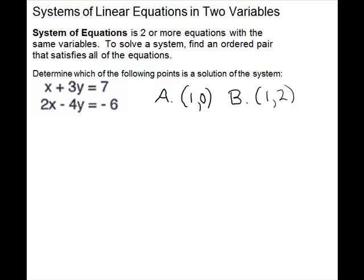So for our system, we have two different points we're going to check. First, the point (1, 0). We'll plug it in — it has to make both equations true to be a solution of the system. When we plug it into the first equation, we have 1 plus 3 times 0. Does it equal 7? We have 1 plus 0 — that does not equal 7. So A is not a solution of the system. It doesn't work for one equation, so we don't have to check the other one.